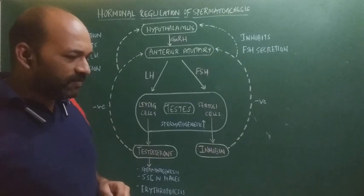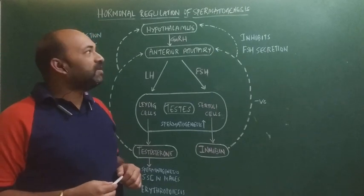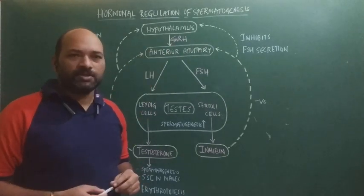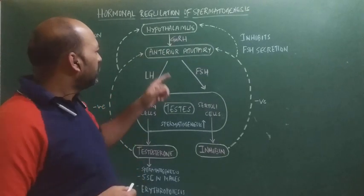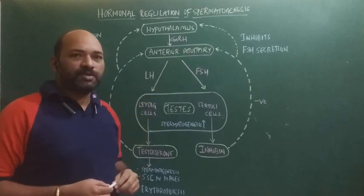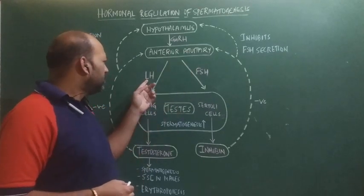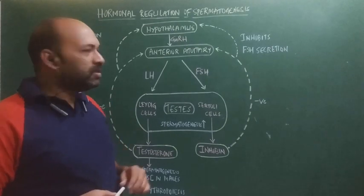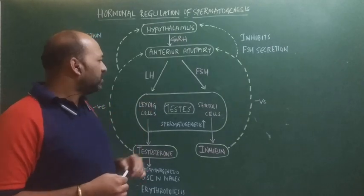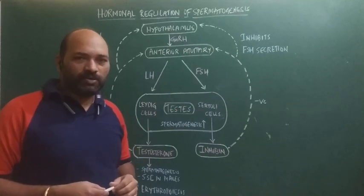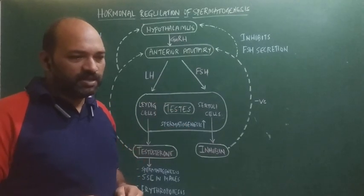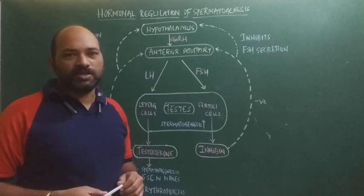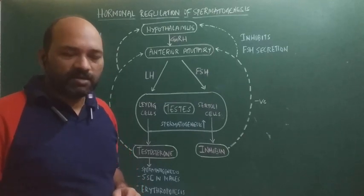In both males and females, the hypothalamus controls and causes the release of the anterior pituitary hormones such as LH and FSH. These hormones are secreted from the anterior pituitary and thereafter act upon the gonads — the testes as well as the ovary — bringing about changes in those respective gonads.